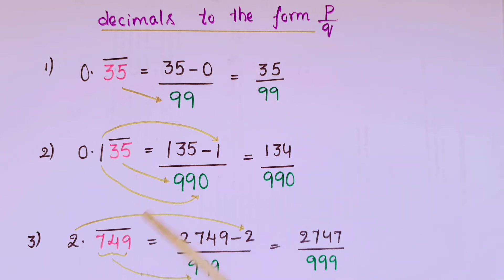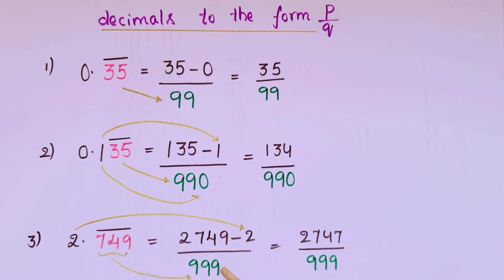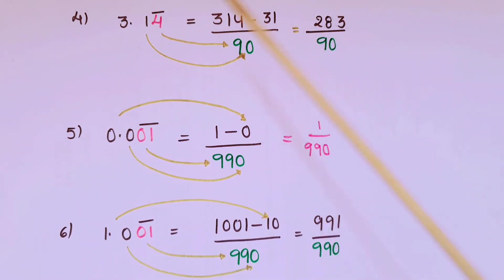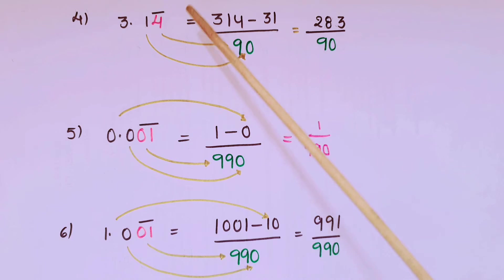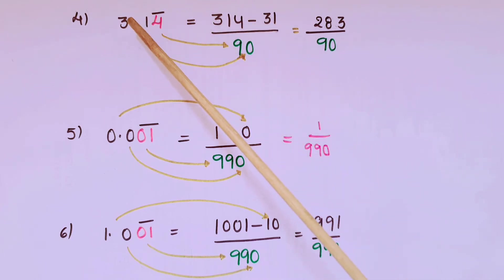The next one is 2.749 bar. First write 2749, then minus the remaining digits not below the bar — here that is only 2, so write minus 2. Below the bar there are three digits, so write three nines. That is equal to 2747 by 999.